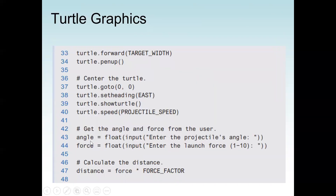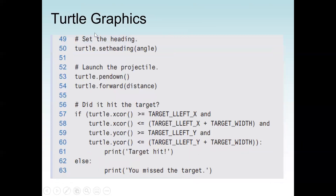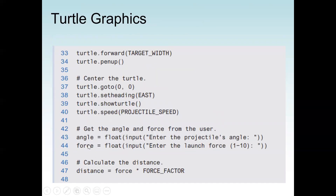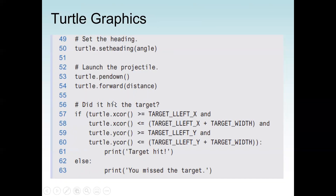We get the angle and the launch force from the user — these two values determine whether we hit the target. The launch force should be between 1 and 10. We calculate the distance as: distance = force * force_factor. We set the heading to the entered angle, then call turtle.pendown() and turtle.forward(distance) to launch the projectile.